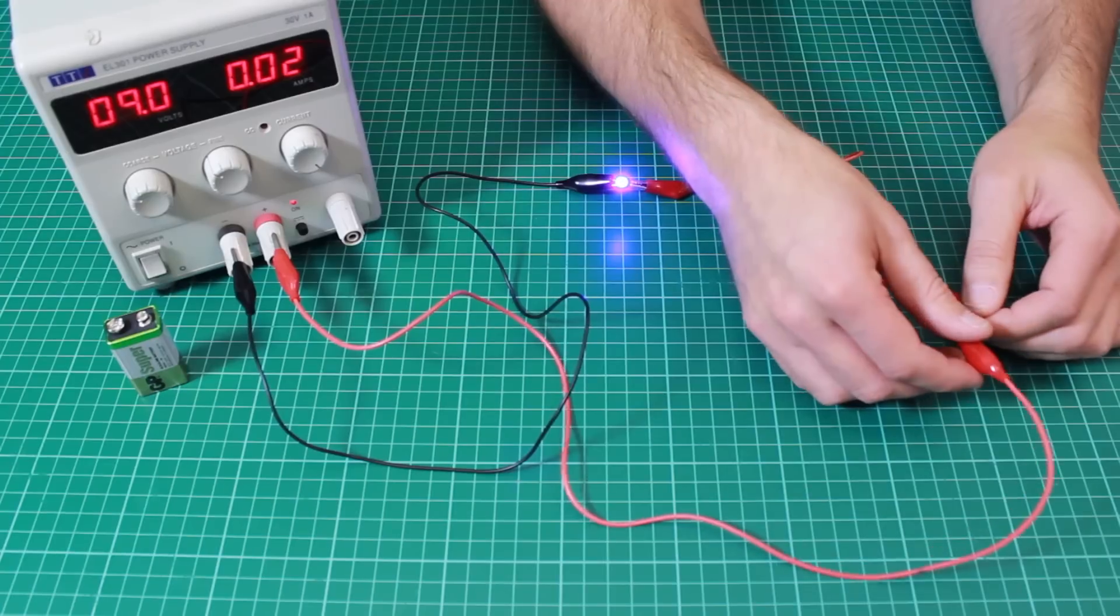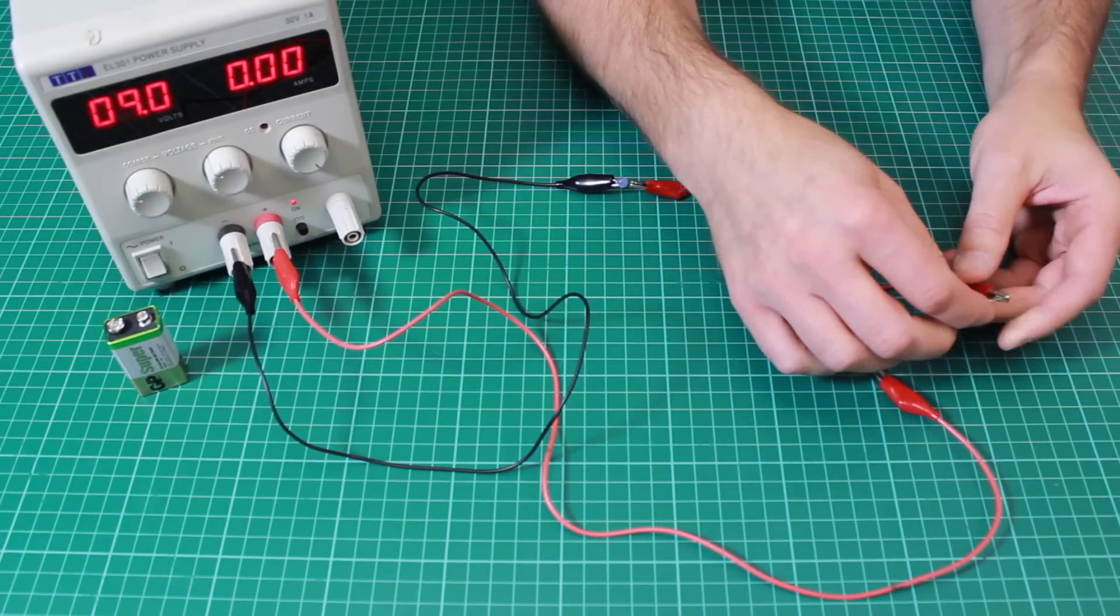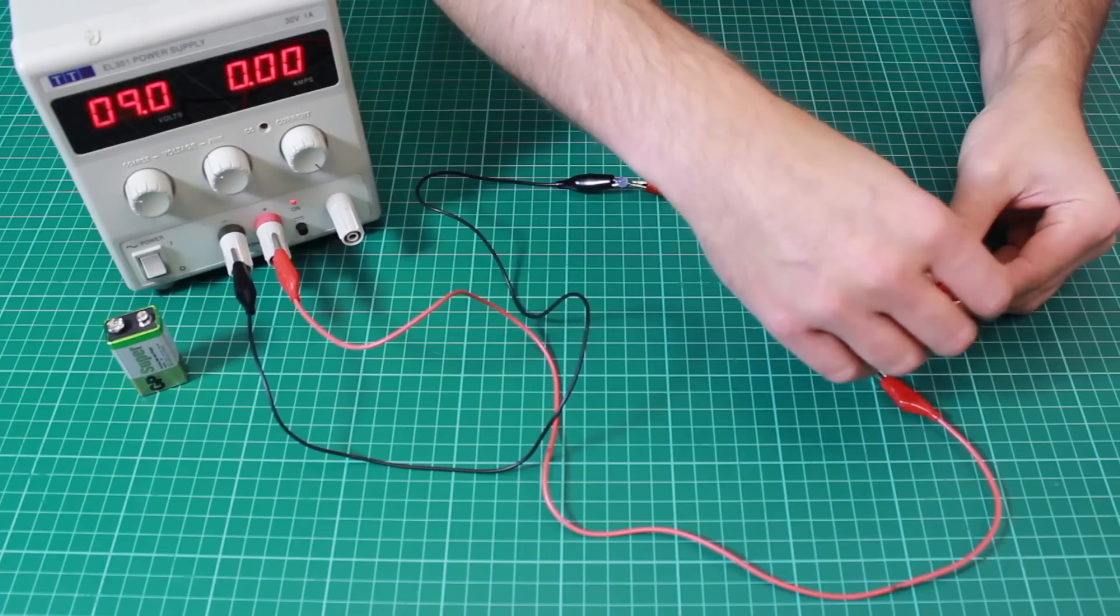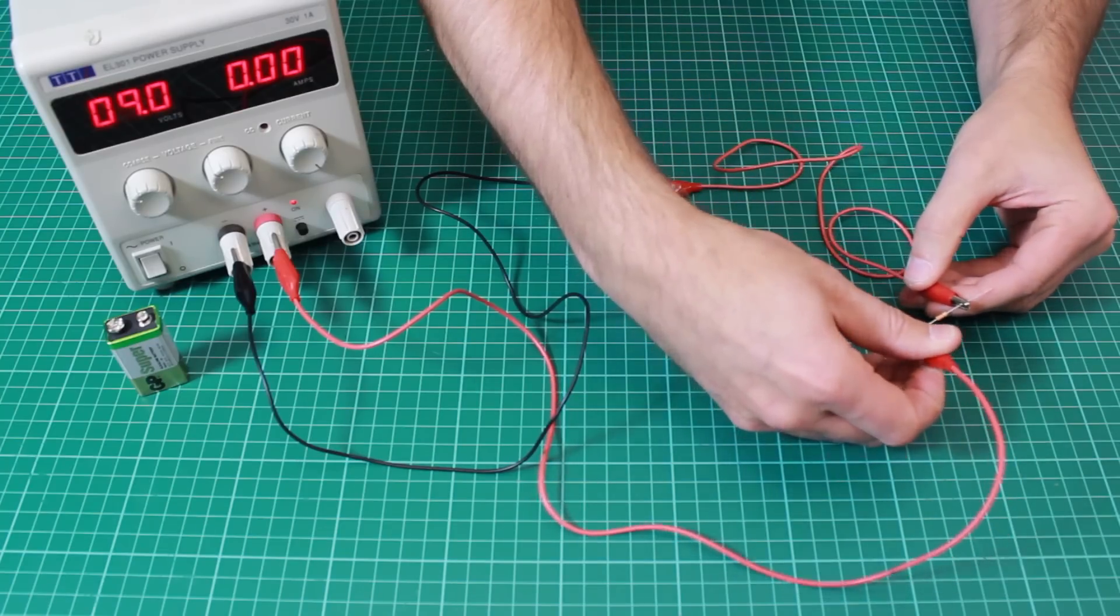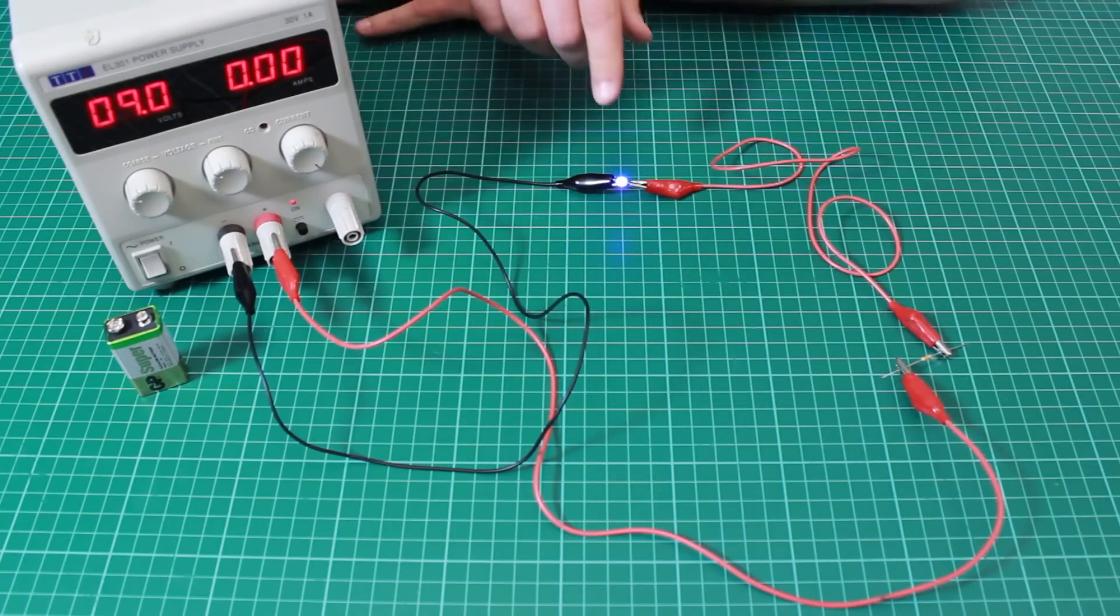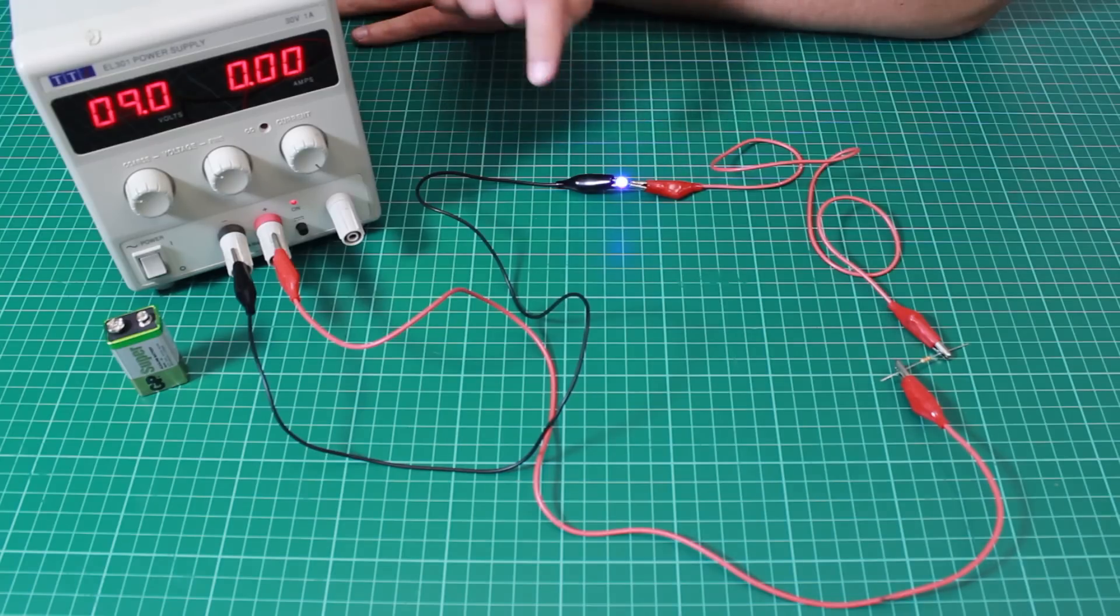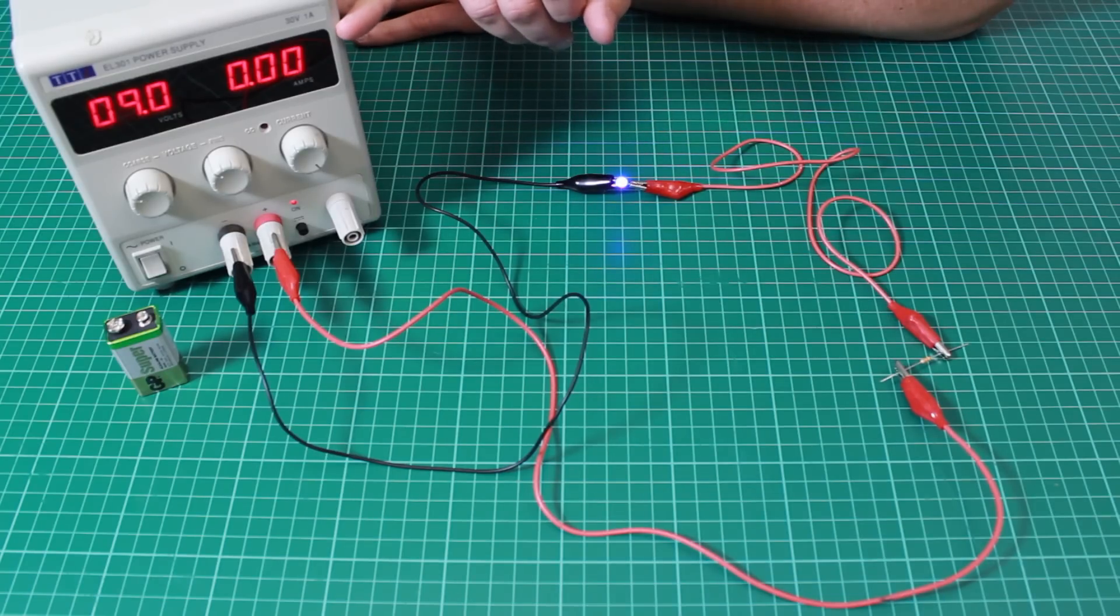If we swap that resistor for a much larger value resistor, we can see that the LED is still lit but now it is much dimmer and the current flowing through it is so small that it's not even shown on our scale here.